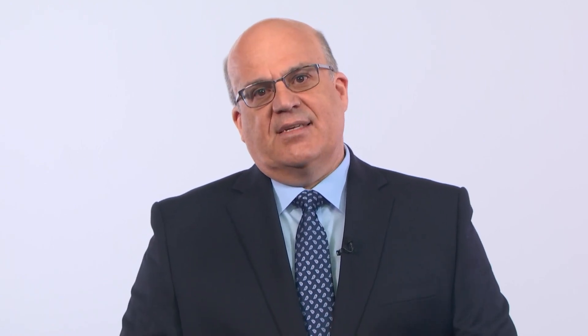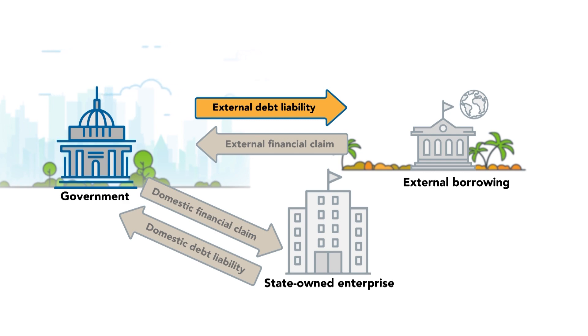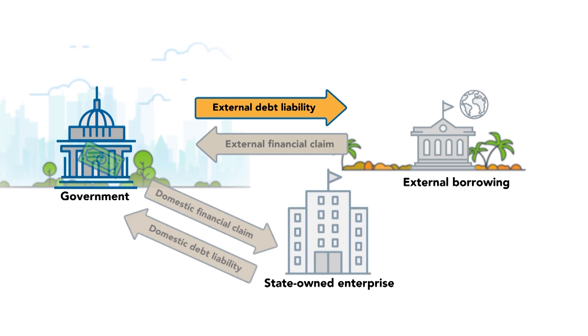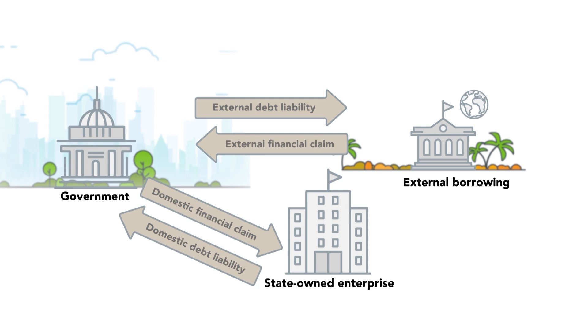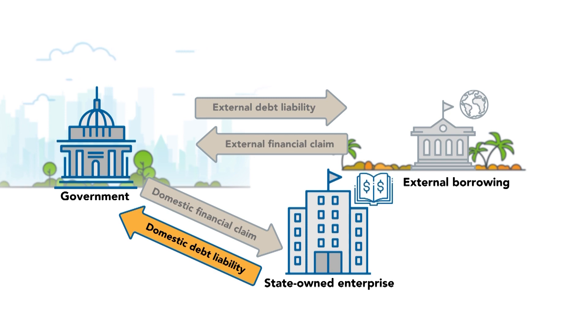The repayment of each of the two debt liabilities is recorded in the books of the unit in whose balance sheet each debt liability appears. Thus, government has a debt liability to the foreign bank. The repayment of this external debt liability is recorded in the books of the government, even if the borrowed funds were on-lent to the state-owned enterprise, and if the state-owned enterprise is, in practice, repaying the foreign bank directly. Similarly, the repayment of the state-owned enterprise's domestic debt liability to the government is recorded in the books of the state-owned enterprise, regardless of what happened in practice. As you can see, we record these economic events separately and do not offset them against each other.